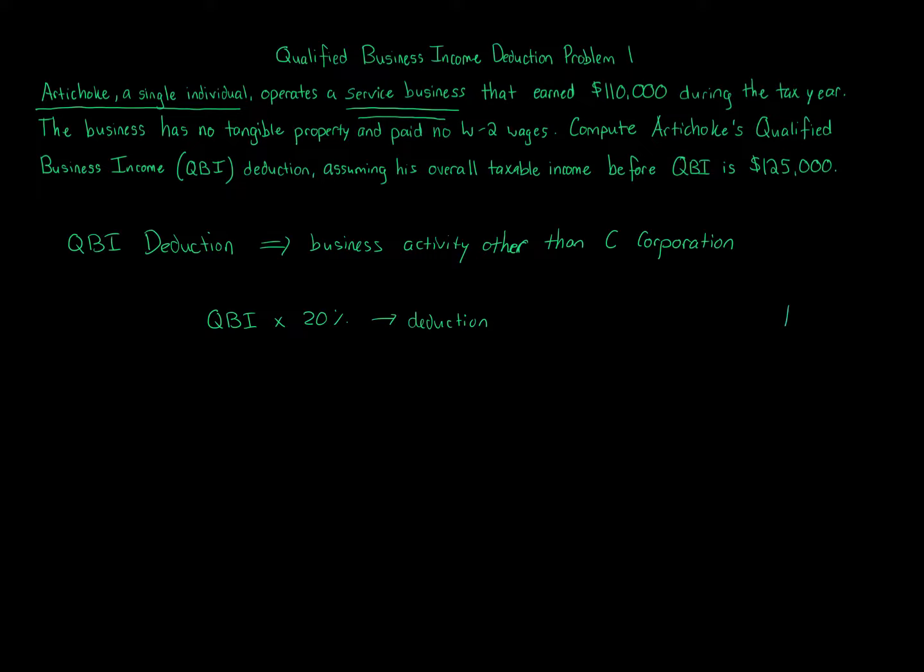Now, there are limits. There are lots of limits out there on the QBI deduction that can be taken. And the main limit that you should definitely know is that when it was originally enacted for all taxpayers other than married filing joint, the limit where a limitation started to apply was if your taxable income was greater than or equal to $157,500.